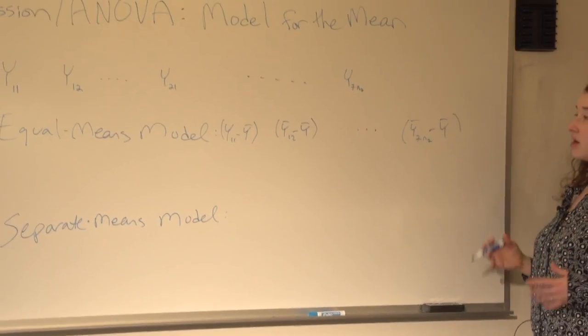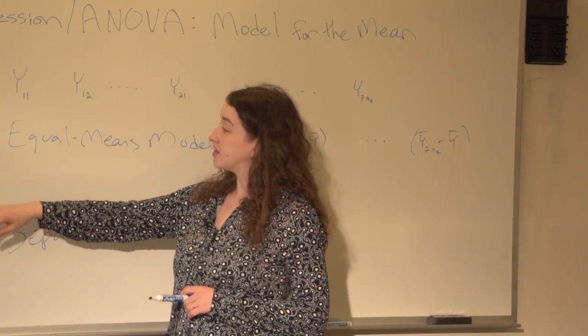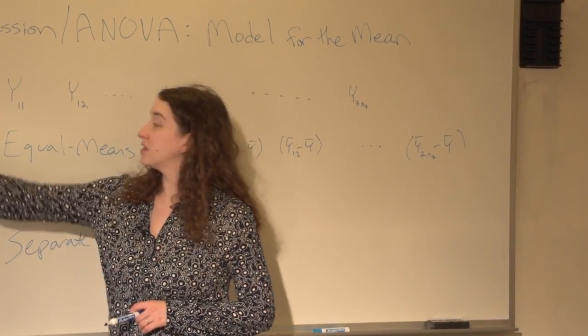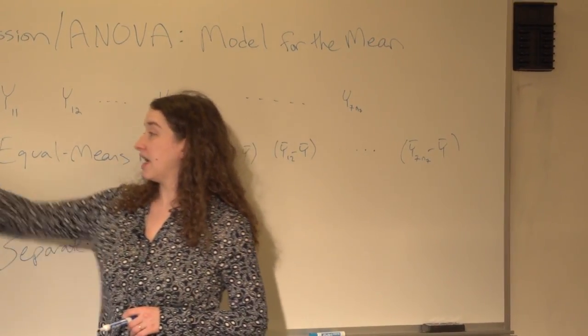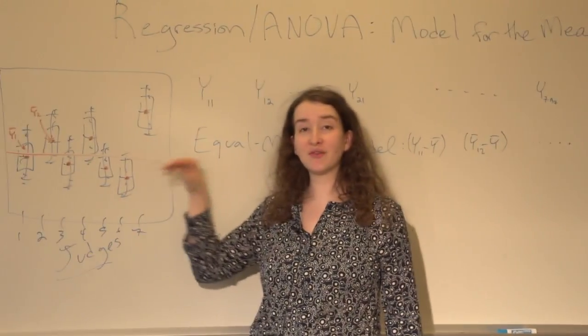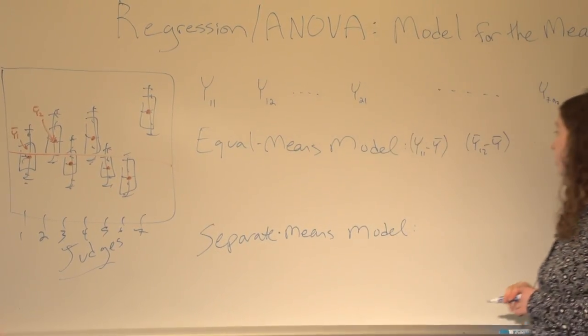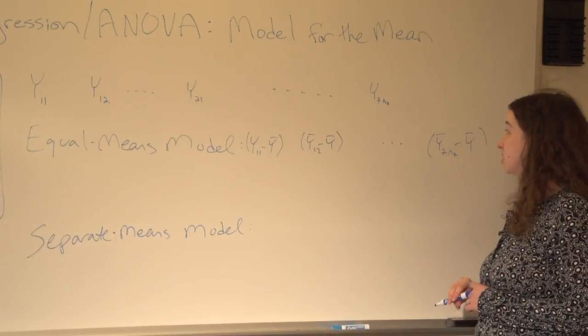In order to figure out whether it makes sense to use an equal means model, I'm going to take each data point and subtract from it this one number. And see how far these points are from this one number, this line. If the points are not that far from the line, then we could roughly say the equal means model is appropriate. These are residuals.